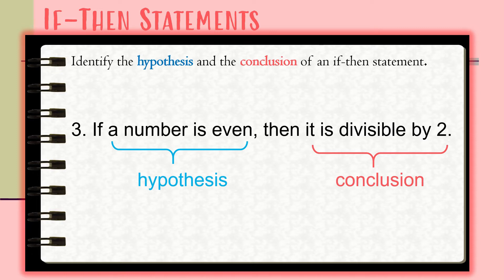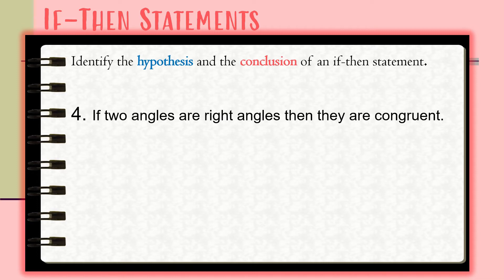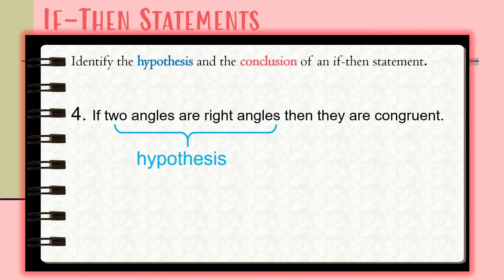We have the statement: 'If two angles are right angles, then they are congruent.' The hypothesis of this statement is 'two angles are right angles,' and the conclusion is 'they are congruent.'